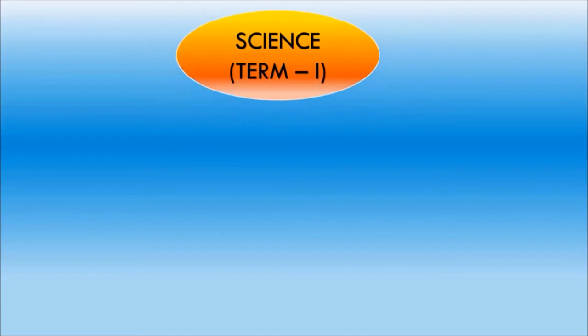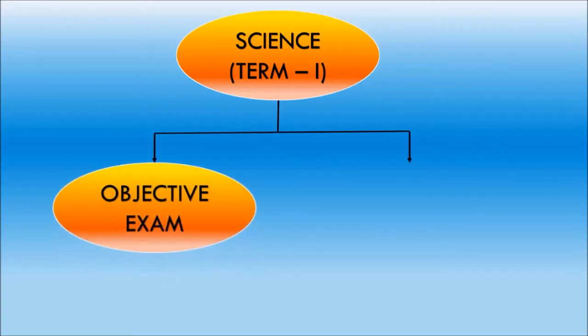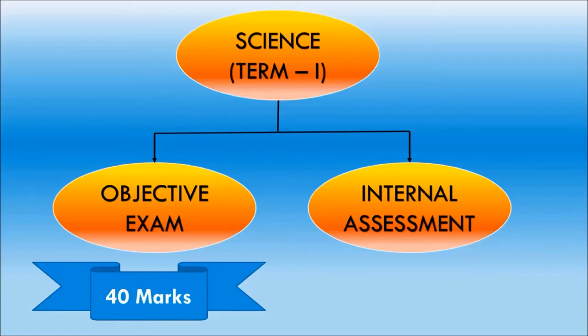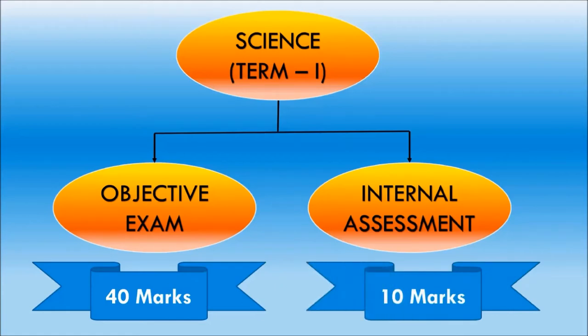As you already know, the science exam for term 1 is divided into two parts. Part 1 is the objective exam and Part 2 is the internal assessment. The objective exam is for 40 marks, which you will be writing in offline mode. Internal assessment for term 1 is for 10 marks. The marks for internal will be sent by your school, and details of this have already been discussed. Hence, the total marks for term 1 is 40 plus 10 equal to 50 marks.